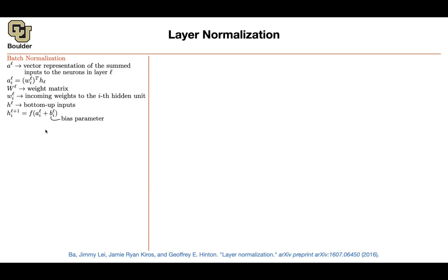Now we do batch normalization. Without it, many deep neural networks won't converge, and the reason is internal covariate shift. Once your parameters change, the statistics of the summed inputs change — their mean and standard deviation shift. Sometimes they fall into a regime where your activation function saturates or kills those activities. So normalization is very important to stabilize training.